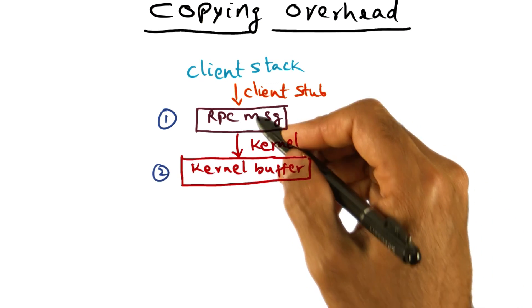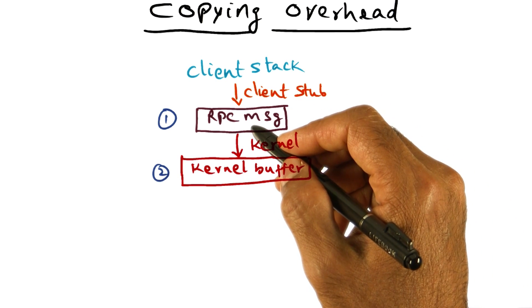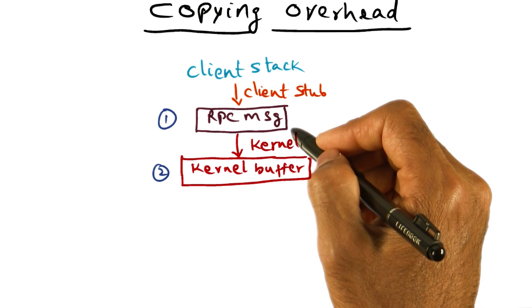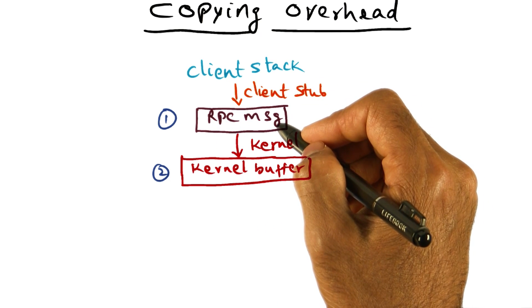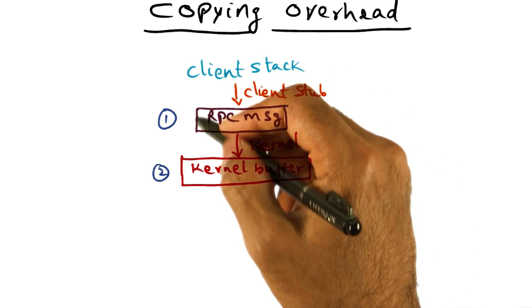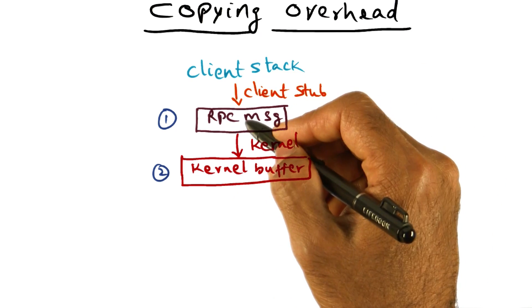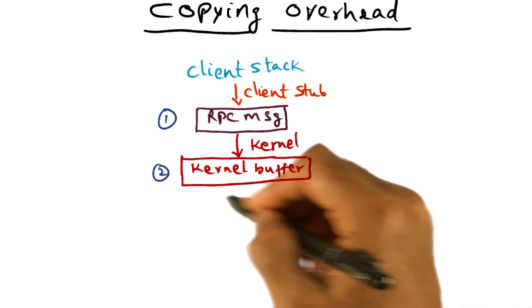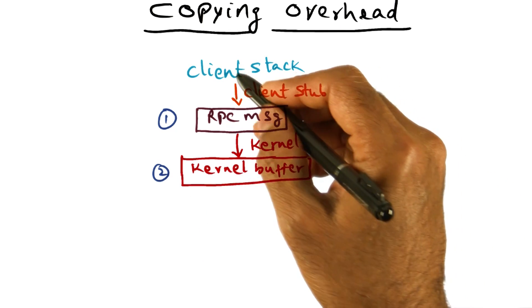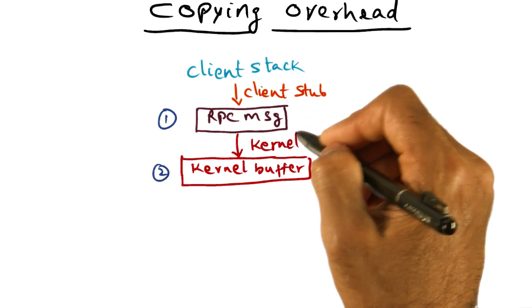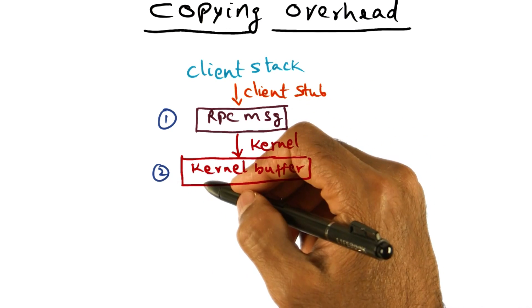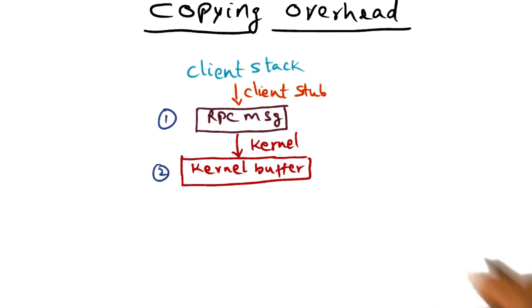The next thing that happens: the client traps into the kernel, and the kernel says there is an RPC message that has to be communicated to the server, and it's sitting in the user address space. So the kernel copies it into its kernel buffer — that's the second copy. From the address space of the client, this RPC message is copied into the kernel buffer.